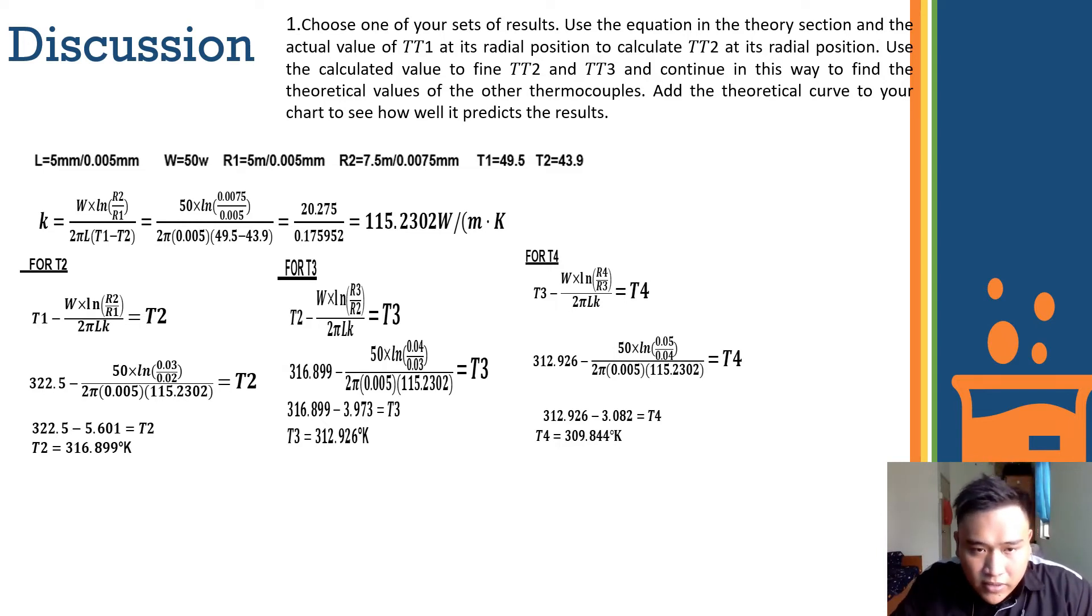And to do that, first, we must extract other data from the lab such as length, watts, radius 1, radius 2, and T1 and T2. First, we must find k using the formula w times natural log of radius 2 over radius 1, divided by 2 pi length times T1 minus T2. And when we insert the data into the calculation, we get k is 152.302 watt meter kelvin.